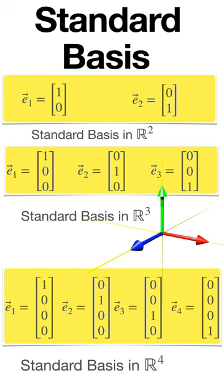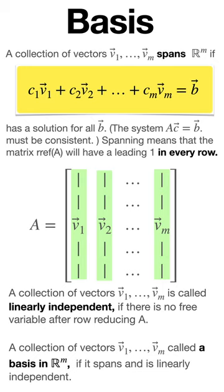The standard basis in Rm consists of m vectors. V1 to Vm span Rm if every vector b is a linear combination of them. V1 to Vm are linearly independent if the row-reduced echelon form of A has no free variables.